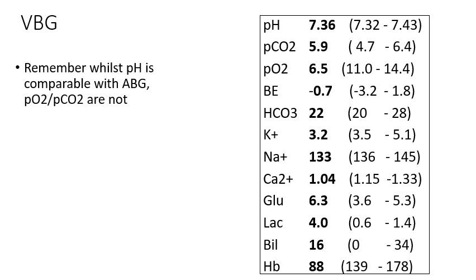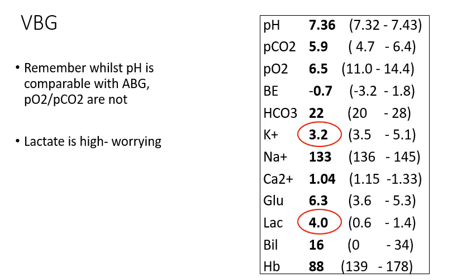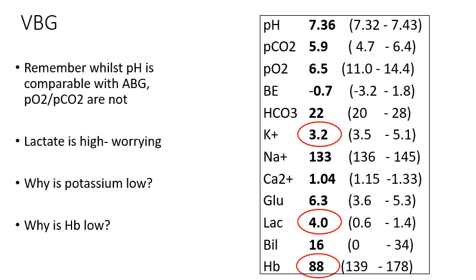Here's her VBG — take a moment to look at it. Remember this is a VBG, so the pH is comparable to an ABG, but the PO2 and PCO2 are not. The most worrying value is the lactate of 4, which is quite high — lactates above 2 should raise your alarm in a query septic patient. The potassium is a bit low, likely due to her diarrhoea, as large-volume diarrhoea causes significant potassium loss. The haemoglobin of 88 is not necessarily concerning in a patient undergoing chemotherapy, since the bone marrow is also a rapidly dividing area — look at the trend rather than a single result.